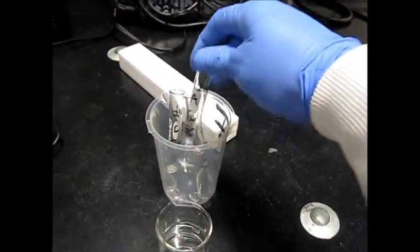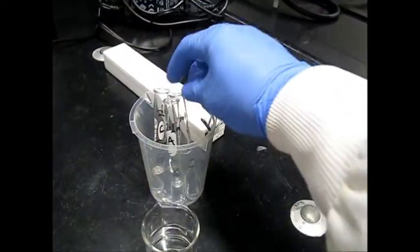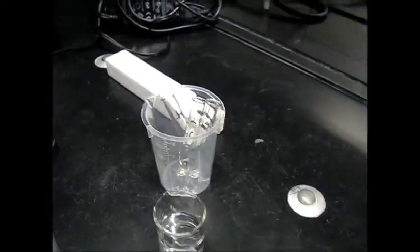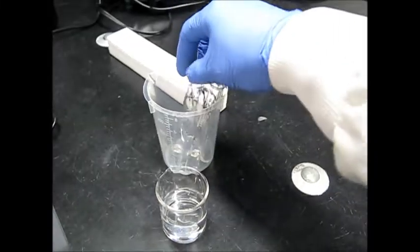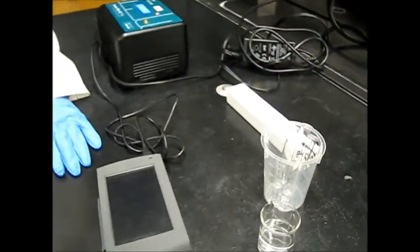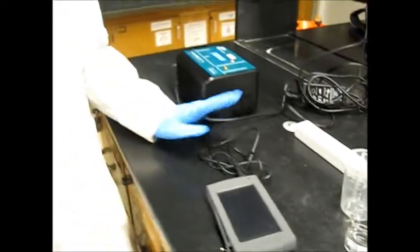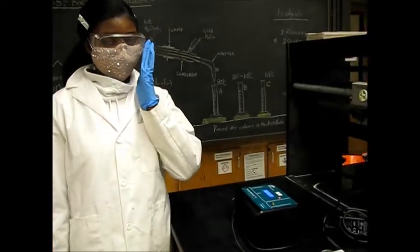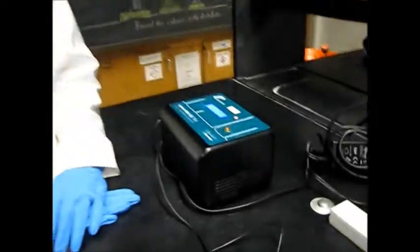So these are the three fractions which we have collected. Fraction A, fraction B, and fraction C. These are the three fractions which we are going to run in the GC. Okay, so we'll come back after 10-15 minutes once our GC will be ready.